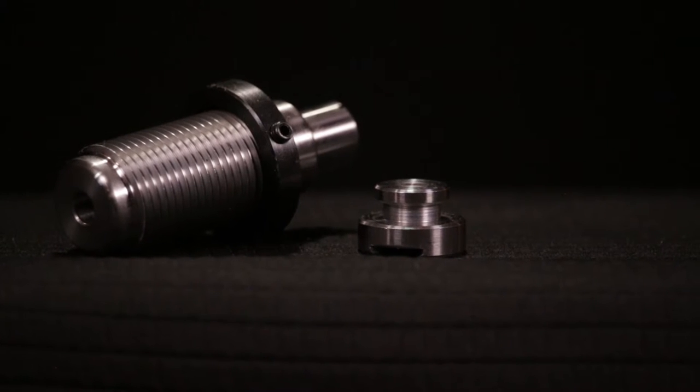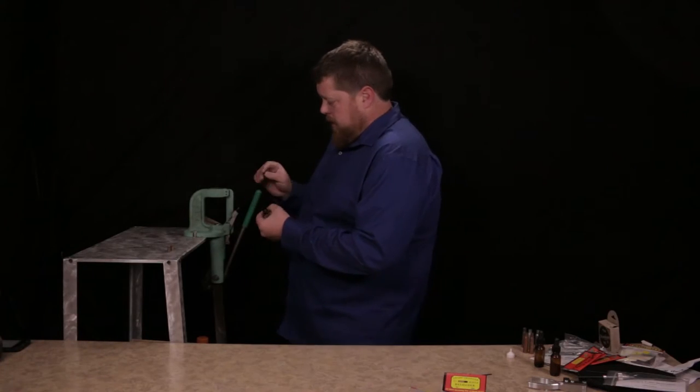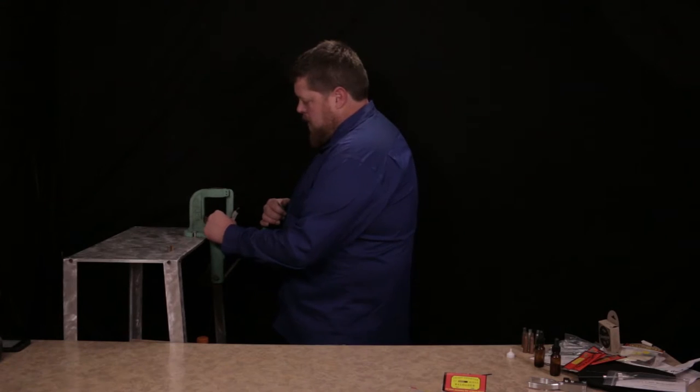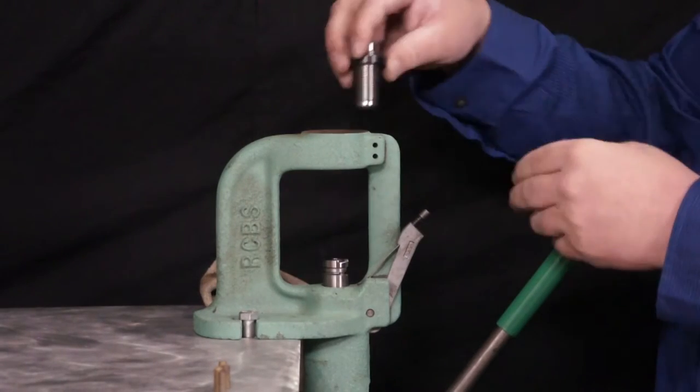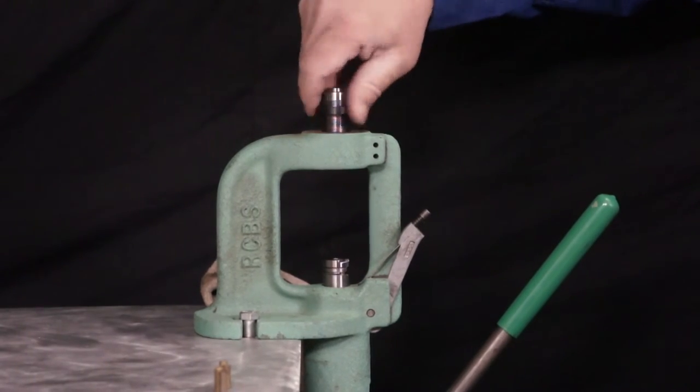It's very simple. It's a resizing die. This die comes with the shell plate. It'll fit in any major brand press. Take the shell plate, fire it right in there. This die is set up, screw it down.